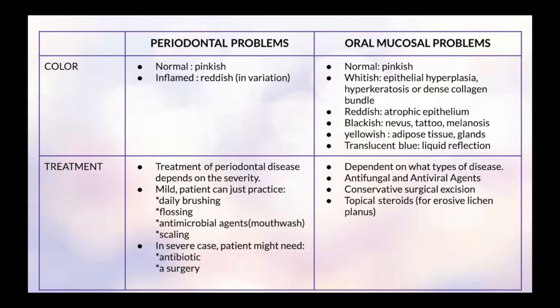The fifth point to differentiate periodontal from oral mucosal problems is by colour. For periodontal problems, the normal colour is pinkish, and when inflamed it becomes reddish. For oral mucosal problems, it changes into several different colours: whitish when there is epithelial hyperplasia, hyperkeratosis, or dense collagen bundle; reddish for atrophic epithelium; blackish for nevus tattoo or melanosis; yellowish for adipose tissue or glands; and translucent blue for liquid reflection.